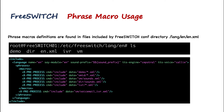Phrase macros are defined in your FreeSWITCH configuration directory under slash lang slash en. For example, if you are installing FreeSWITCH on Debian, it will be in /etc/freeswitch/lang/en. All files included in en.xml will be processed by FreeSWITCH. You can add extra folders or files by opening en.xml and adding your paths.